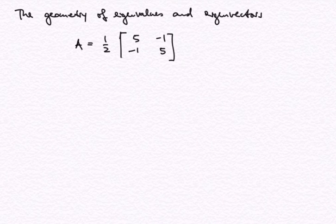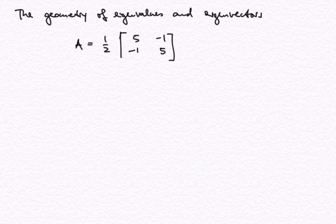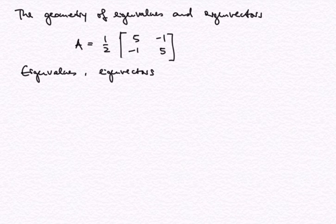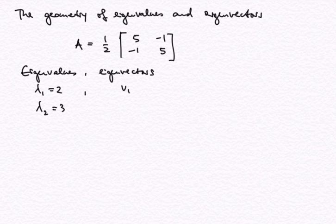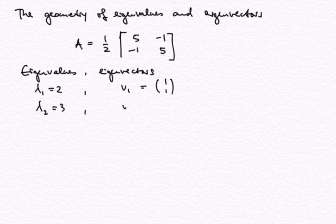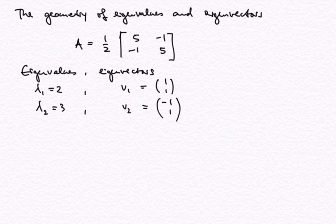Here I'm going to consider this 2x2 matrix that we have already considered in the video on basis change, and there are two distinct eigenvalues and corresponding eigenvectors for this matrix. This is lambda 1 equal to 2 and lambda 2 equal to 3. The first eigenvector corresponding to lambda 1 is given by (1, 1) and the second eigenvector is (-1, 1) corresponding to lambda 2 equal to 3.